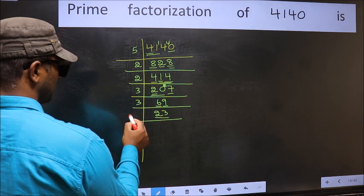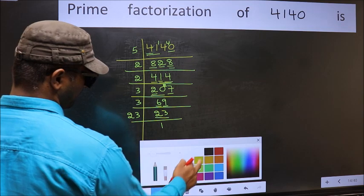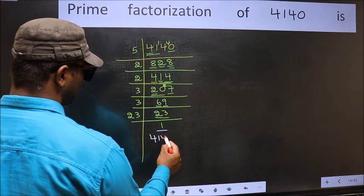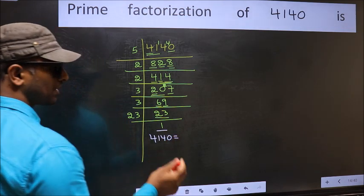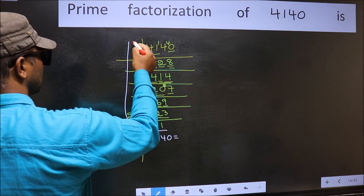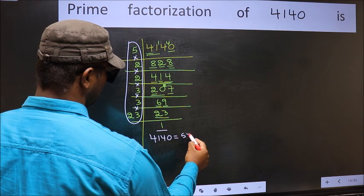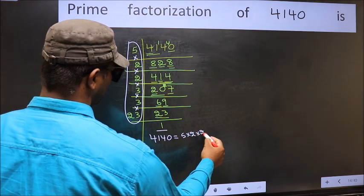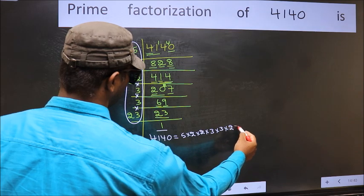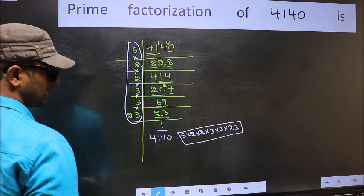Now we have 23. 23 is a prime number. So 23×1 is 23. So we got 1 here. So the prime factorization of 4140 is the product of these numbers. That is 5×2×2×2×3×3×23. This is the prime factorization of 4140.